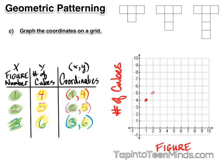And then finally, our third coordinate is three comma six. So I'm going to go over three to the right, and up to six.